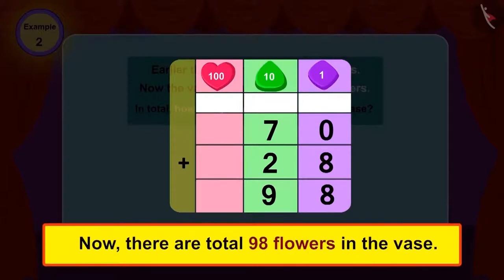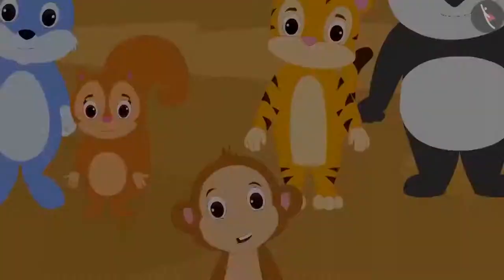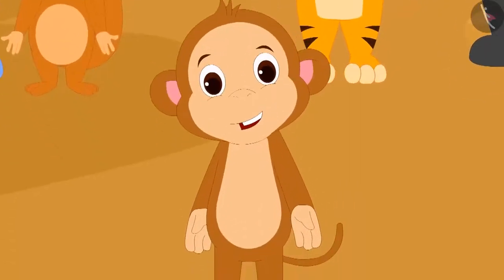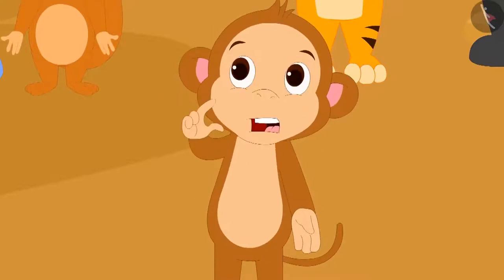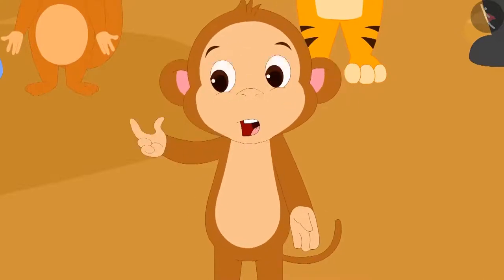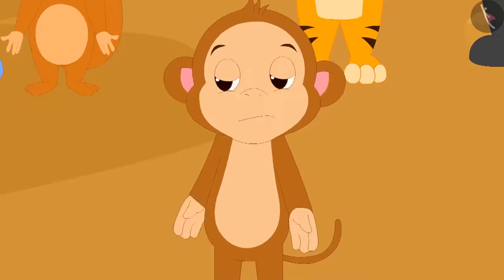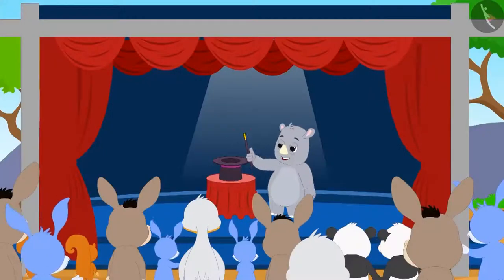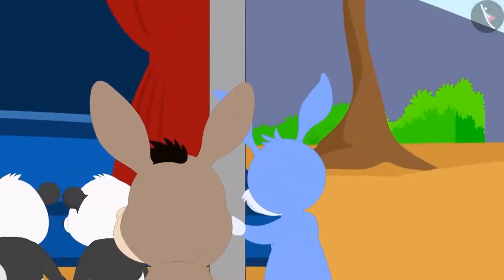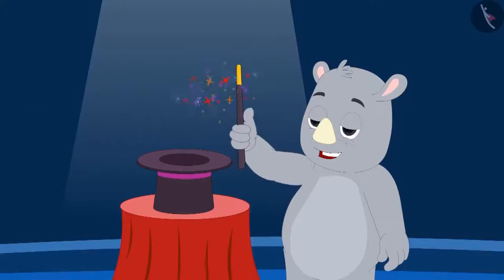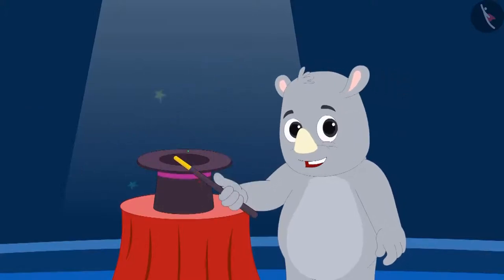Yes! Now there are 98 flowers in the vase. Babban was enjoying Gaggu's magic, but he felt that Gaggu was making a fool of them. Therefore, Babban hid behind the stage before the start of Gaggu's next trick. Gaggu began showing his third magic.